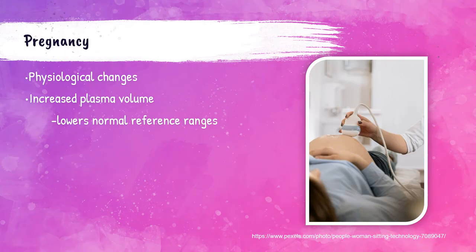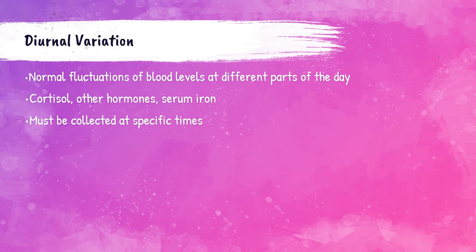During pregnancy, the overall volume of blood is increased, specifically caused by an increase of the plasma portion of the blood. This creates a dilutional effect, which may lower hemoglobin, hematocrit, and red blood cell counts in pregnant patients. Some blood levels are affected by the time of day. Diurnal rhythm is a term that describes the normal fluctuation of blood levels at varying times of the day. Because of diurnal rhythm, some blood tests like cortisol and iron must be collected at specific parts of the day — these are called timed draws — and the phlebotomist will be instructed at what time each patient needs their blood drawn.